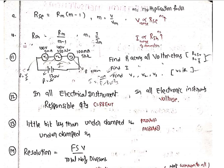This portion is very very important — most exam questions come from here. Series resistance formula: R_SE = r_m × (m − 1), where m = V / V_m (V_m is the measured voltage, m is the multiplication factor). The range of voltage is proportional to series resistance. Shunt resistance formula: R_SH = r_m / (m − 1), where m = I / I_m (I_m is the meter current, I is the range of current).